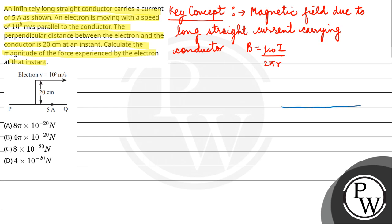Watch out here. Current carrying conductor has the current 5 ampere, and this is electron which is moving at the velocity 10 to the power 5 meter per second, and this distance is 20 centimeter.